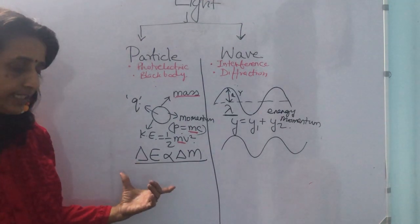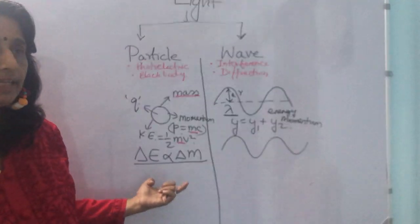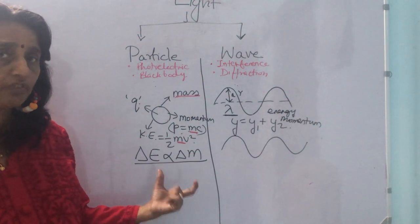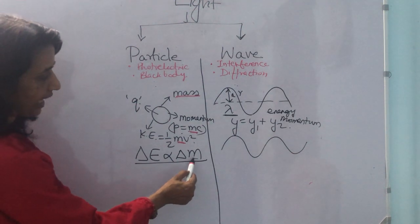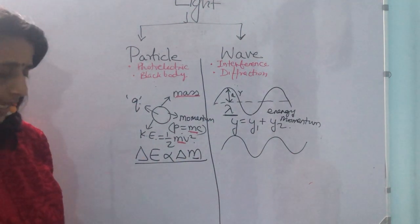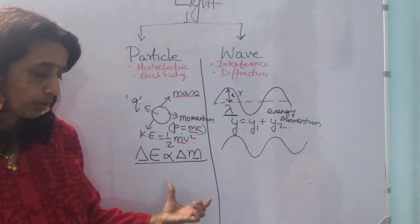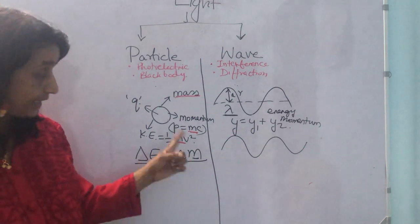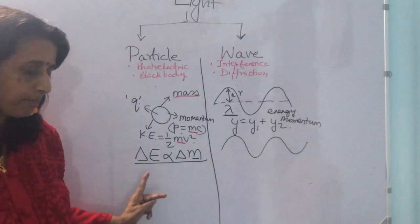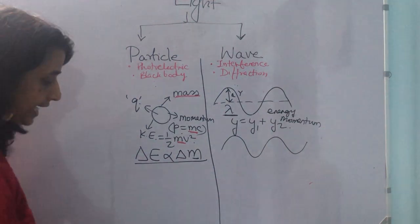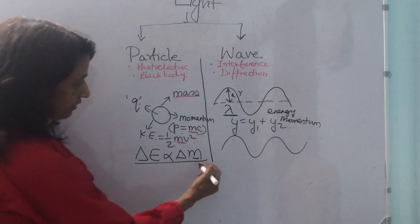De Broglie in 1924 stated wave-particle duality and he said that this can be a universal characteristic of nature. But the particle under observation will be having a very small mass. Electromagnetic radiations, particles like electrons, protons, neutrons, etc., they also exhibit wave nature. And Lewis de Broglie combined both these properties and gave rise to his famous expression, the de Broglie wavelength.